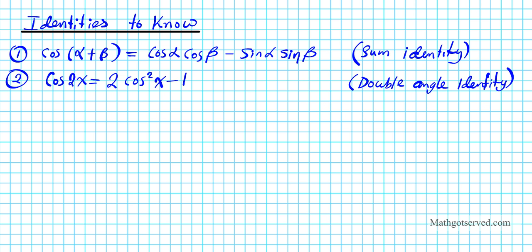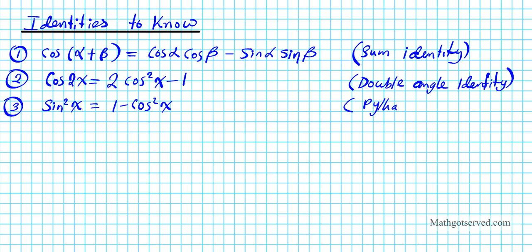We also need to know a variation of the Pythagorean identity solved for sine squared x, which is: sine squared x equals 1 minus cosine squared x. You know that cosine squared x plus sine squared x equals 1, so if I subtract cosine squared x from both sides, I'll end up with this variation of the Pythagorean identity.